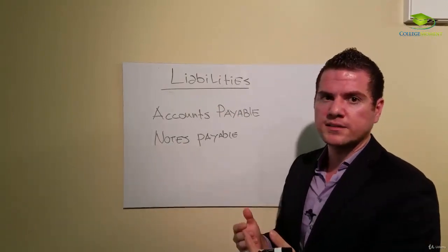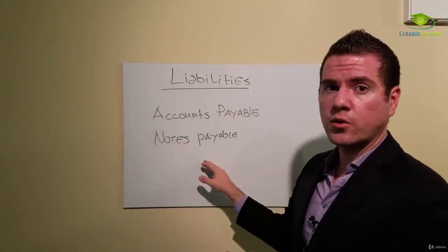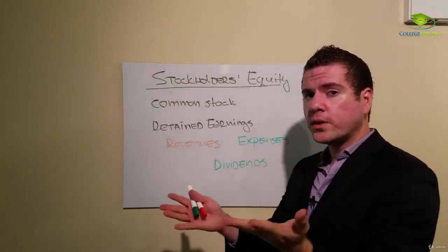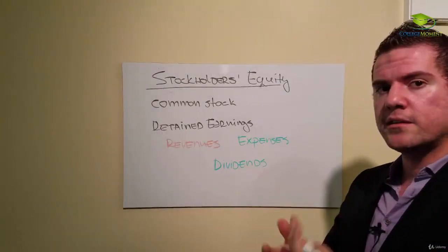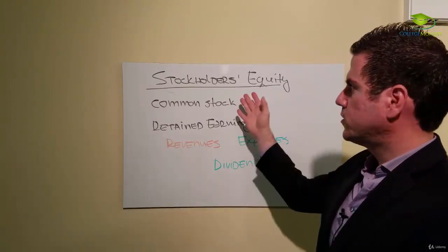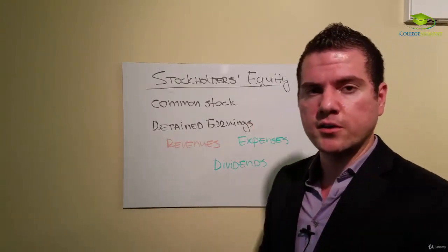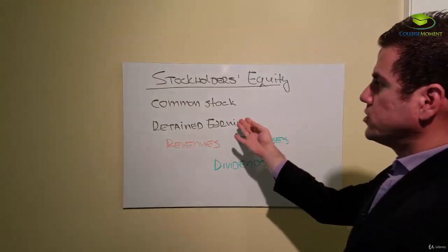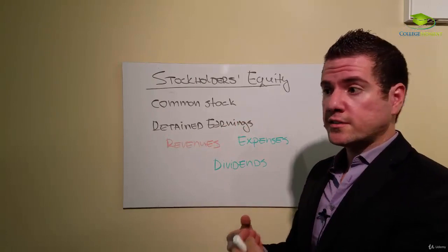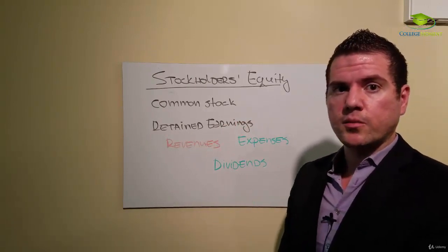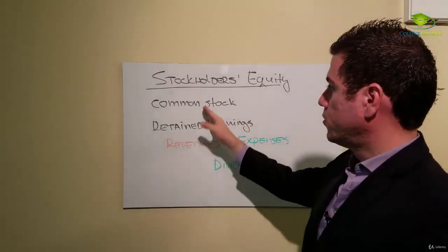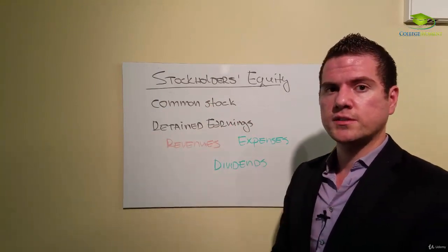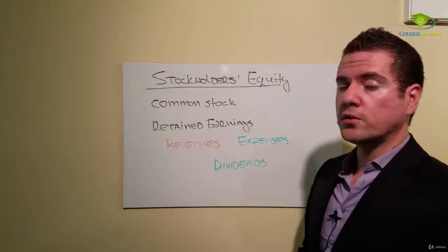Notes payable is practically the same thing, probably long-term rather than short-term. Next one is stockholders' equity, and this is a little bit more complicated. Stockholders' equity means the owners' claim against the company's assets. So in our case, we have common stock—those are the stocks, the ownership that the company issues. Who owns the company? And retained earnings—those are the two sections that we have in stockholders' equity.